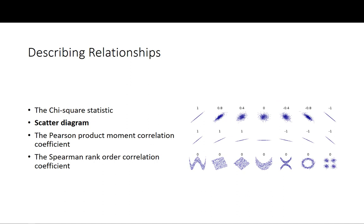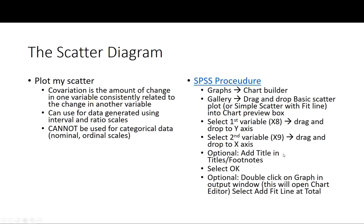The second thing I'm going to show you in this particular video is the scatter diagram that shows visually the relationship between variables. We need to do a scatter plot where we look at the covariation. The covariation is the amount of change in one variable that is consistently related to the change in another variable. We can use this for data generated using interval or ratio scales but you cannot use it for categorical data, nominal or ordinal scales.